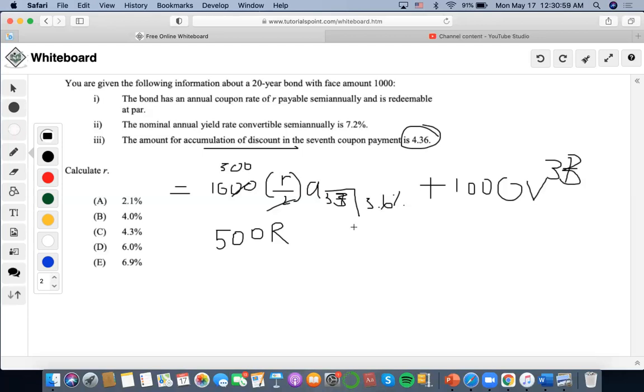So I'm going to solve this. I'm going to do 1 as the payment, 33 as the number of periods, 3.6 as the interest rate, 0 as the future value, compute present value. It's going to be 19.13. So 19.13 times 500R, I get 9565R plus 1,000 times 1.036 to the negative 33, which is 311.26, right? So that's the book value for the seventh coupon payment.